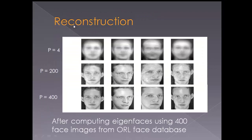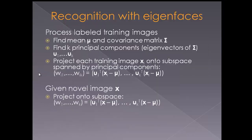With just 4 principal components, the reconstruction quality is limited. With 200 principal components the results are a little better, and with 400 principal components we are able to get very good reconstruction results.